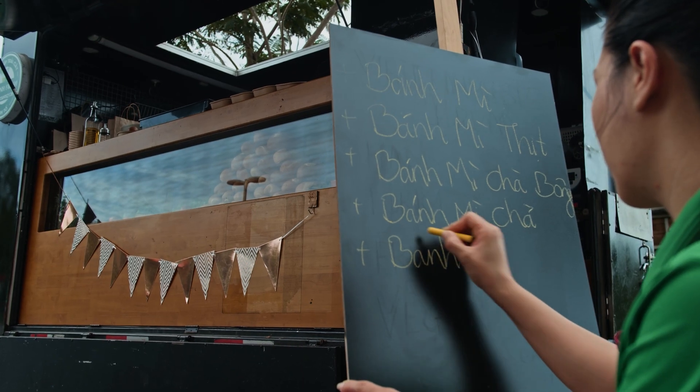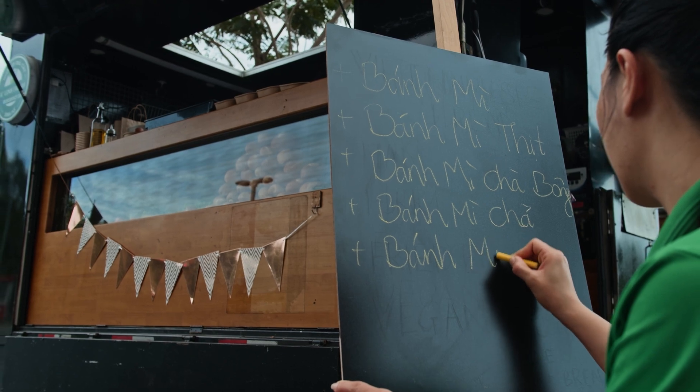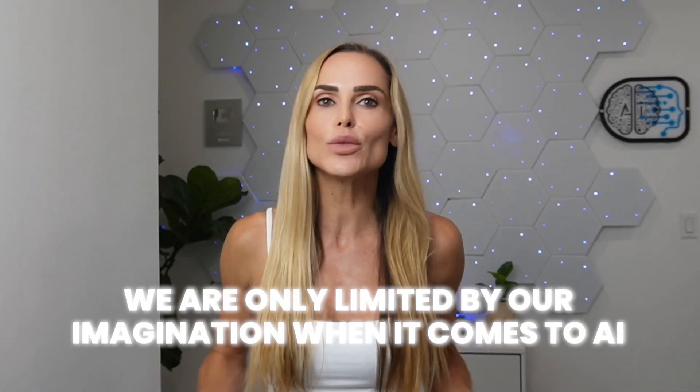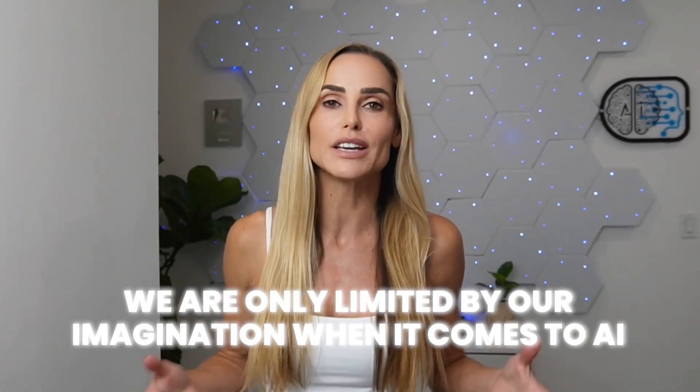I use ChatGPT Vision to find out what's wrong with my plants and get instructions on how to fix it. You might use this to translate signs or menus while traveling abroad, to magnify text that's hard to read, or to troubleshoot something in real time. The important thing to understand is that we're only limited by our imagination when it comes to AI.